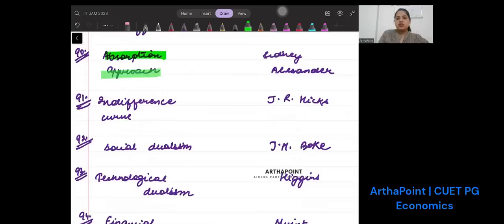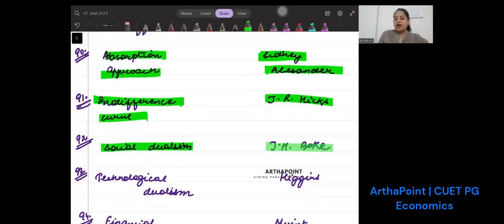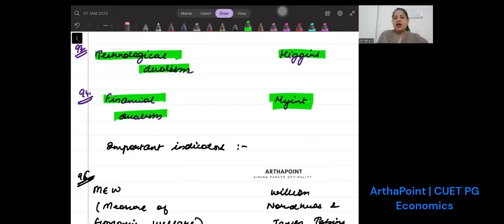Absorption approach is given by Alexander - this is Sidney Alexander. Indifference curve is given by J.R. Hicks. Social dualism is given by J.H. Boeke. Technological dualism is given by Higgins. Financial dualism is given by Myint.